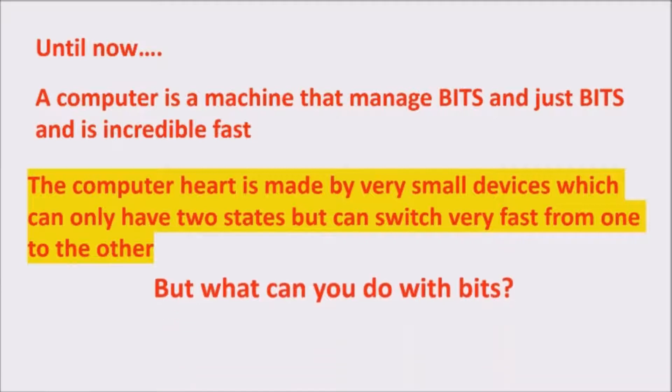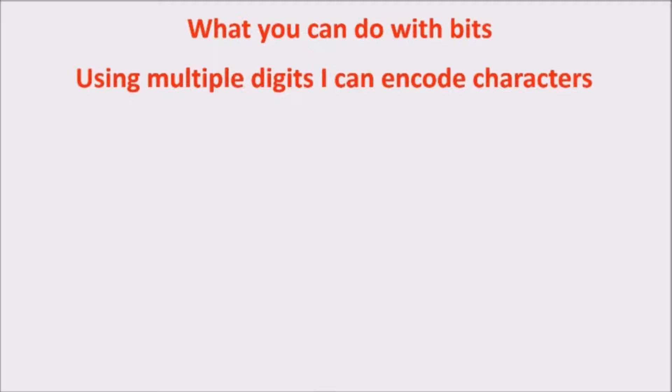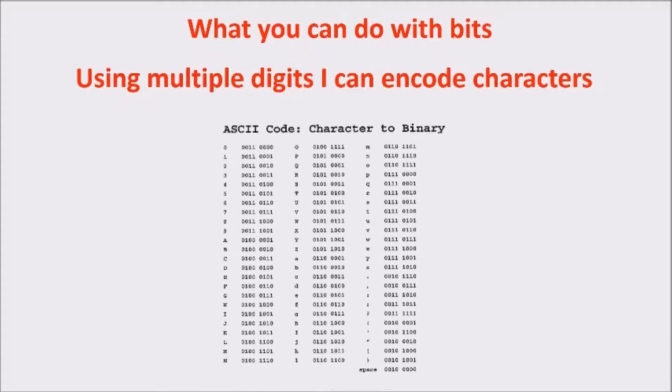But now the problem is, what you can do with bits? So now, we can ask ourselves, what can we do with bits? Well, using multiple digits, I can encode characters. We saw something similar with the telegraph. But in this case, we use 0,1 instead of dash and dots. We see the ASCII code used to encode characters, letters, numbers, punctuation. You see, we use 8 bits, so 8 digits, which is called a byte.